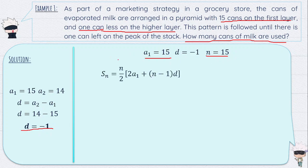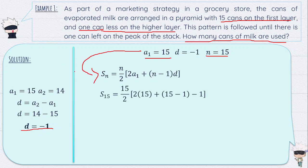After identifying the three given values needed for the arithmetic series formula, let's substitute: S of 15 equals 15 divided by 2, times the quantity 2 times 15 plus 15 minus 1 times negative 1. Applying PEMDAS inside the bracket: 2 times 15 equals 30, and 15 minus 1 equals 14. So we get S of 15 equals 15 divided by 2, times the quantity 30 plus 14 times negative 1. Then 14 times negative 1 equals negative 14.